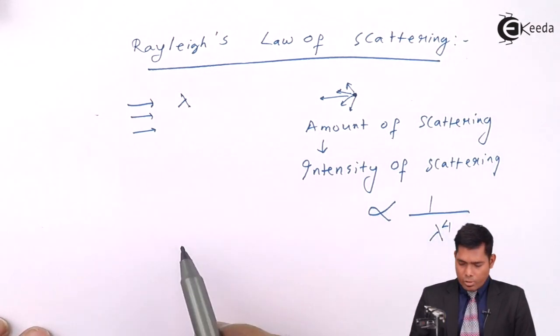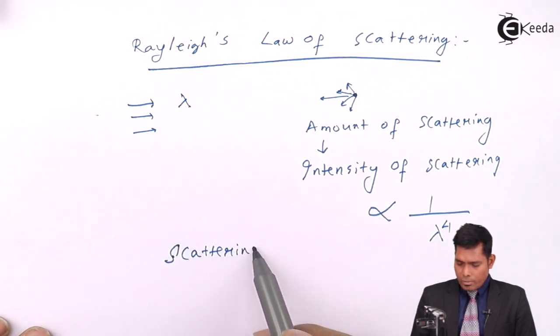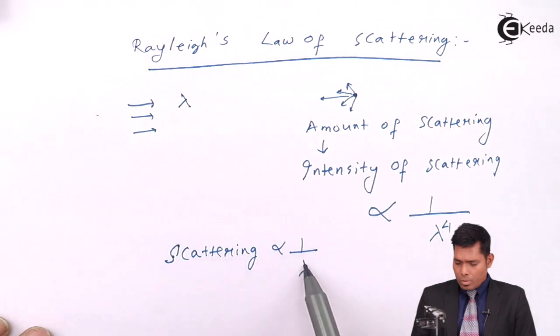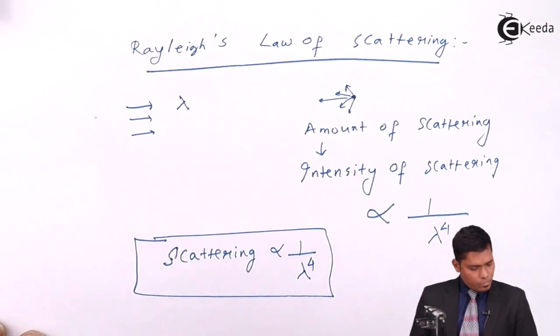So the intensity of scattering is inversely proportional to the fourth power of wavelength of light used.